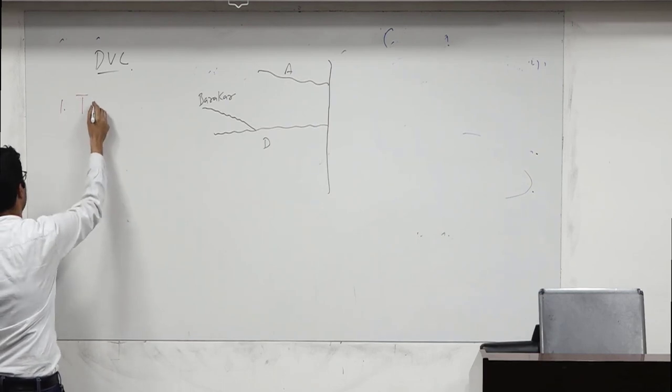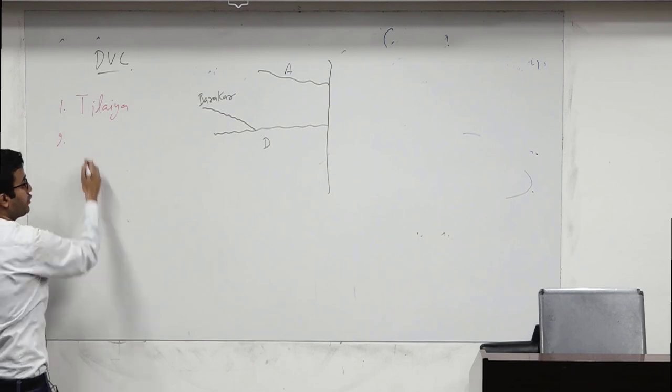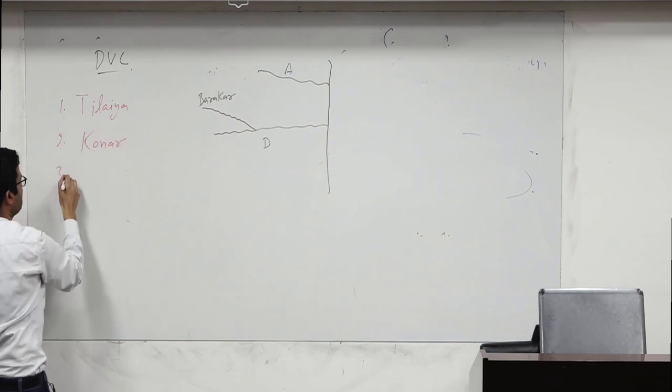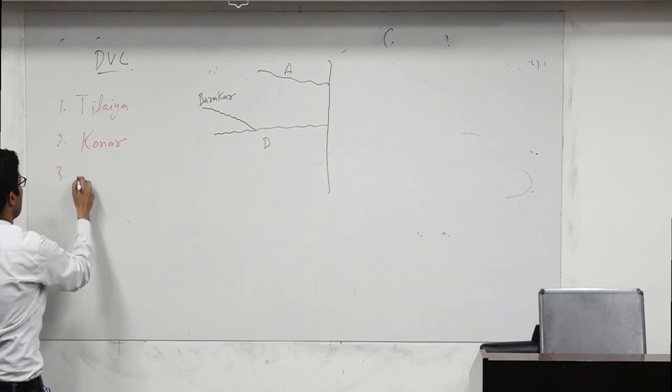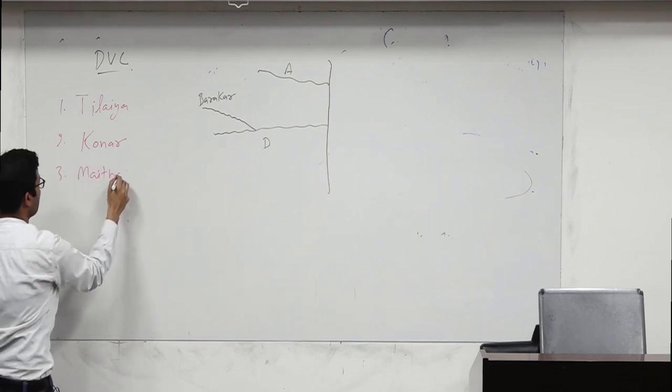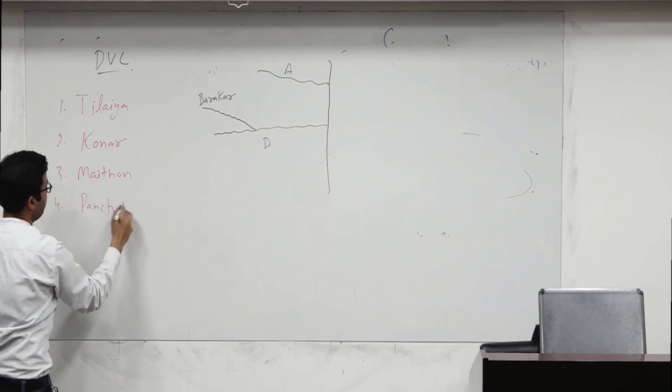T-I-L-A-I-A. Second is Konar, K-O-N-A-R. Third one is Methon, M-A-I-T-H-O-N. Fourth one is Panchet, P-N-C-H-E-T.